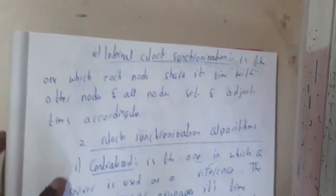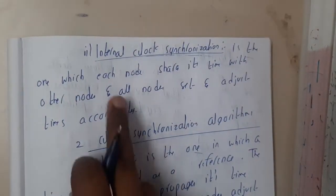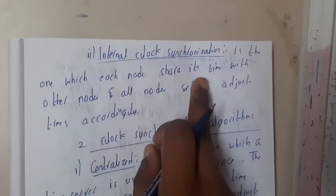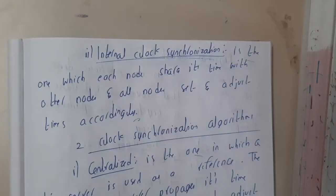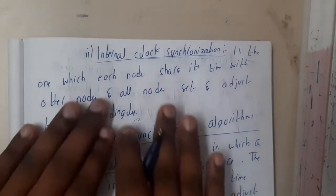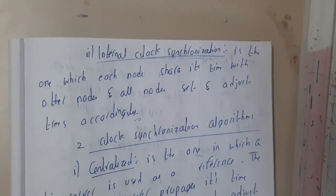Internal clock means you will be using your own clock. It is one in which each node shares its time with others, and all nodes adjust their time accordingly. Basically, the systems will share the clock among all the systems and they will be adjusting. Finally, they will be adjusted to some time.